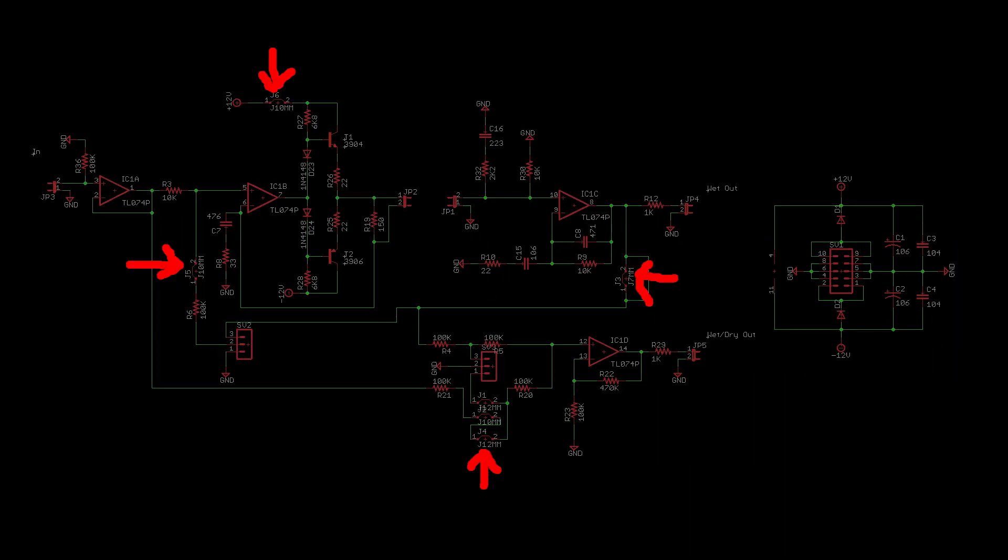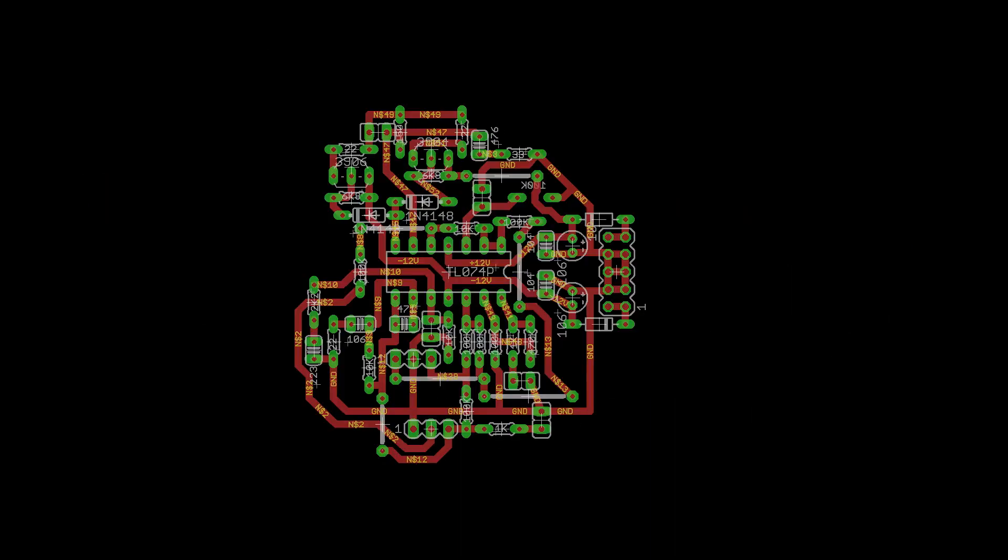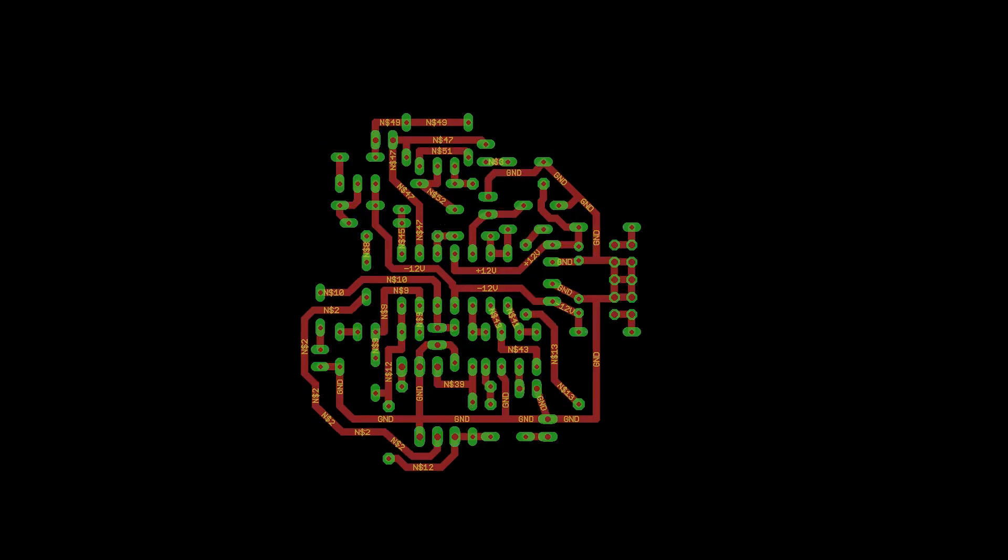To lay out this schematic for etching, a few jumps had to be added to get things to route, and the jacks and pots were all swapped to solder pads since these components would not be attached directly to the PCB. Here it is all laid out. Now with the legend turned off, this is what we will be left with once the PCB is etched.